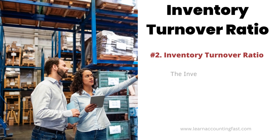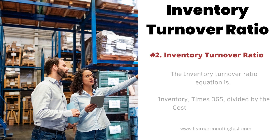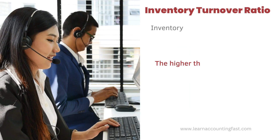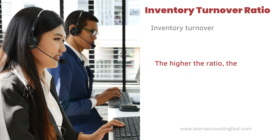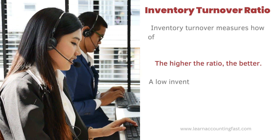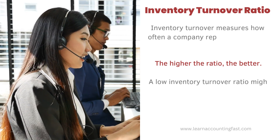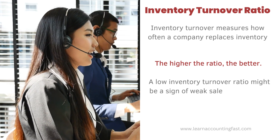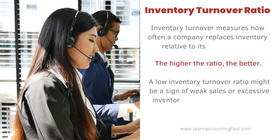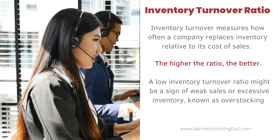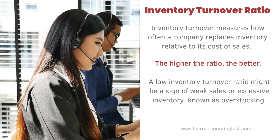Number 2: Inventory Turnover. The inventory ratio equation is: inventory times 365 divided by cost of goods sold. Inventory turnover measures how often a company replaces inventory relative to its cost of sales. The higher the ratio, the better. A low inventory turnover ratio might be a sign of weak sales or excessive inventory, known as overstocking.